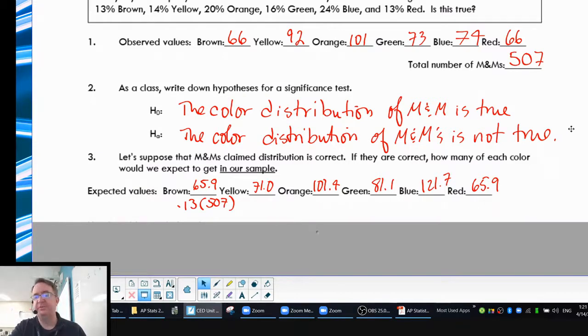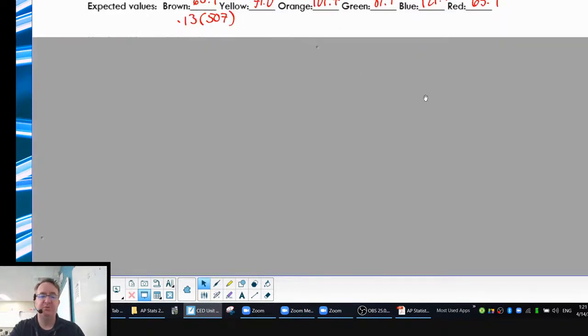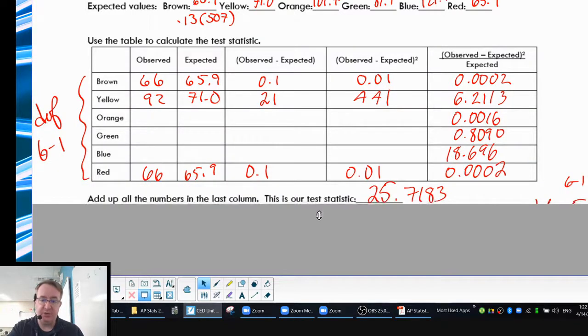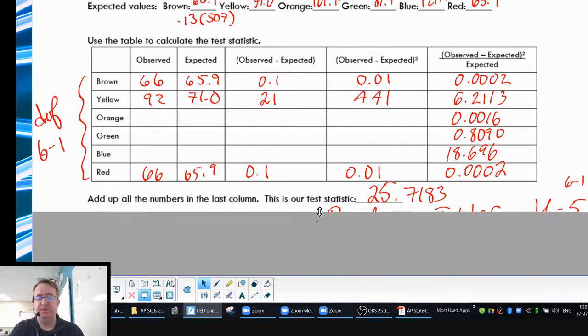Now, much like what we did with standard deviation, we're going to measure how close these things are to what they're expected. So for brown, what we ended up doing is that we have 66, we had 65.9, so there's a difference of 0.1. So we square it. Remember by squaring it, as I said with standard deviation, it helps take the negative out of it so we can sum these all up. And then we're going to take this value here and divide it by our expected value. So in this case, it's 0.00002. You're going to continue to do that for all six colors.